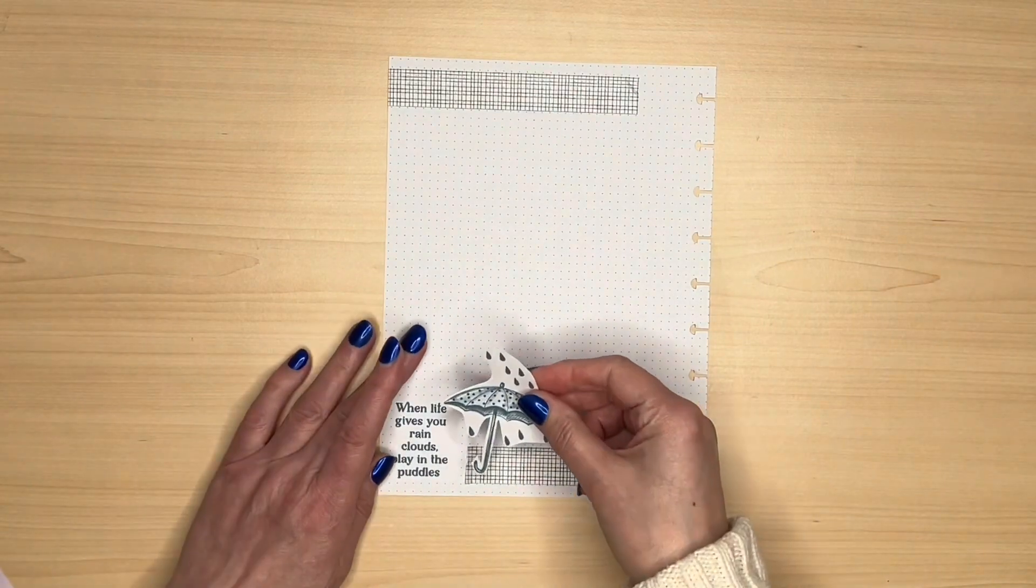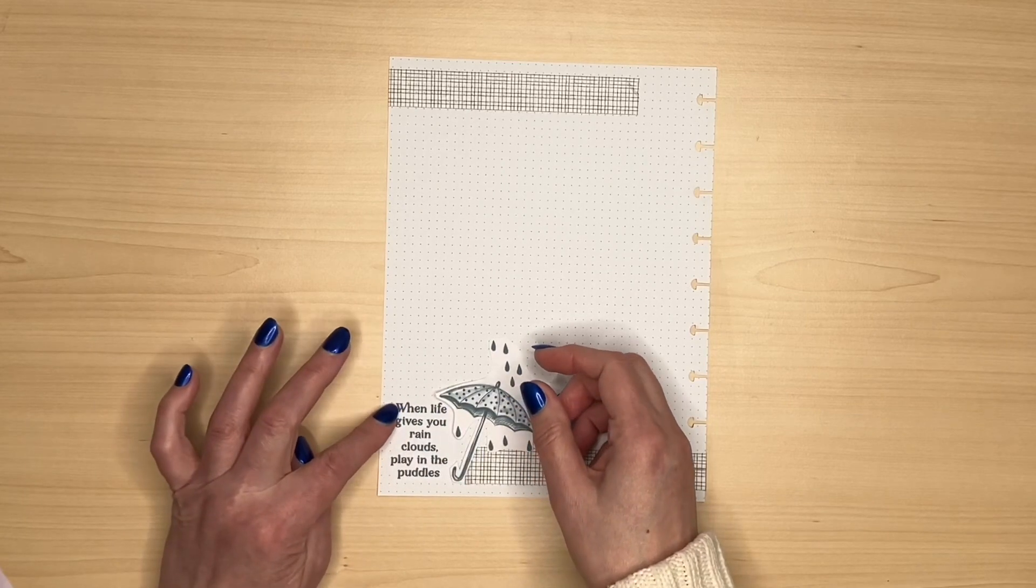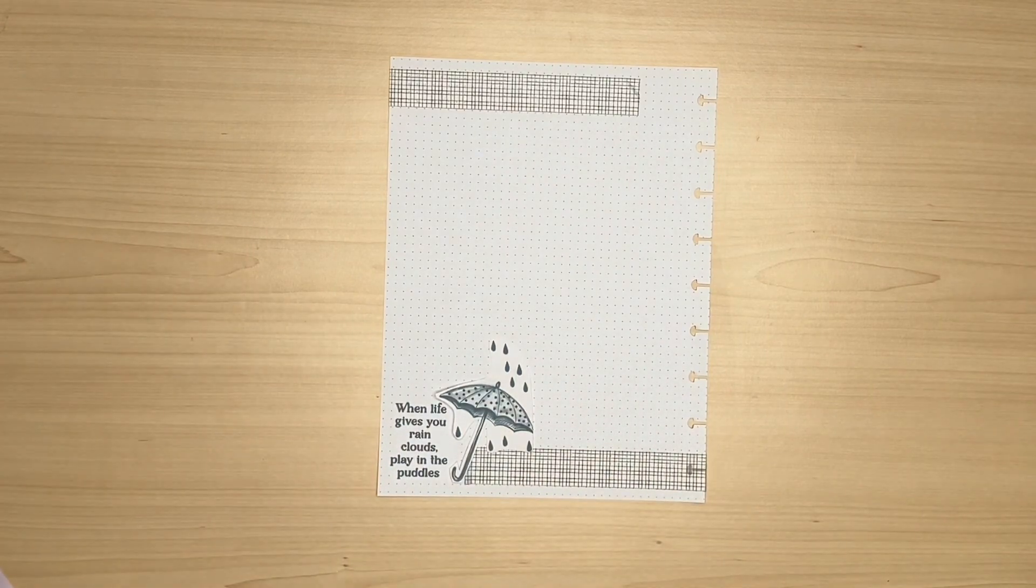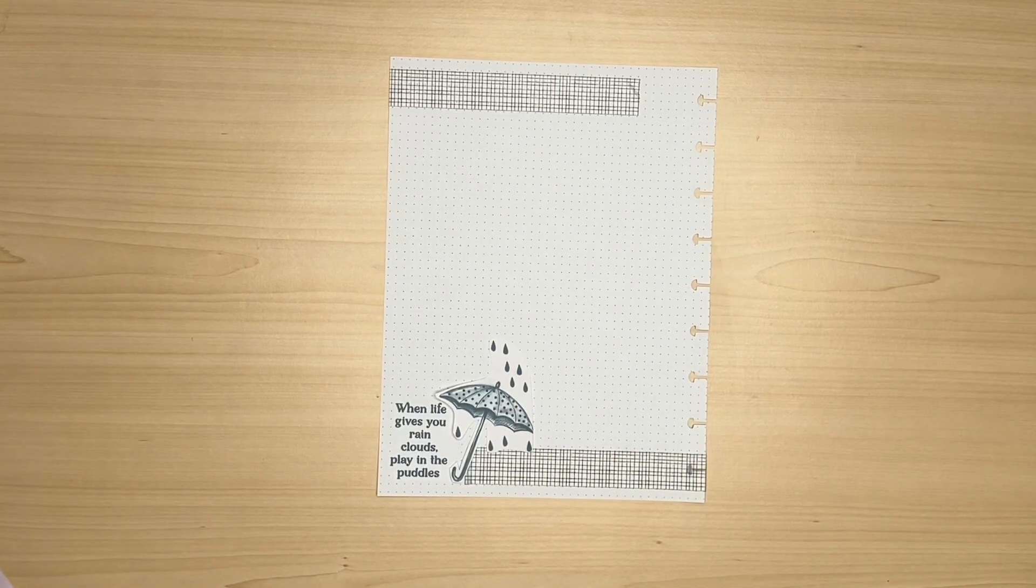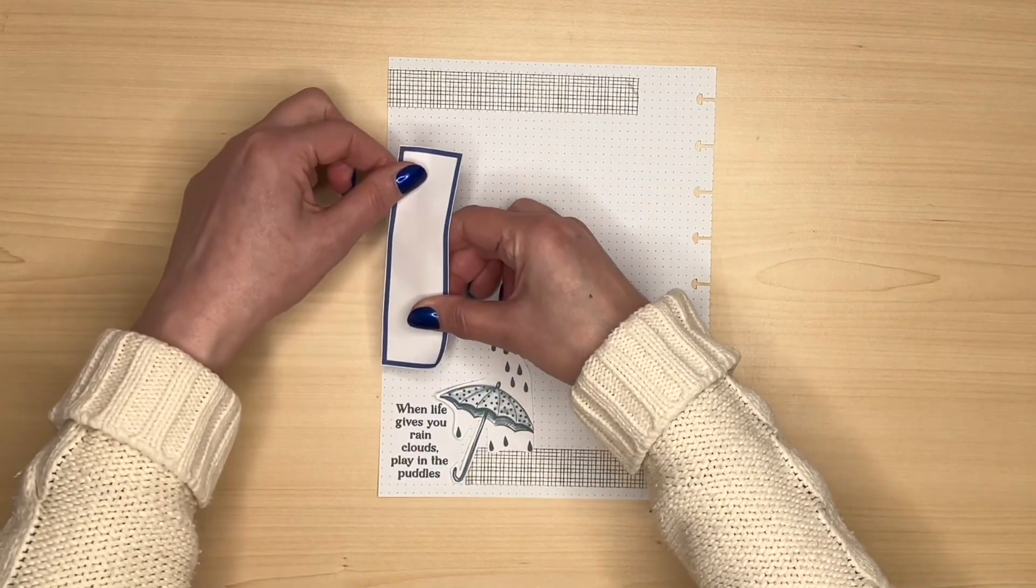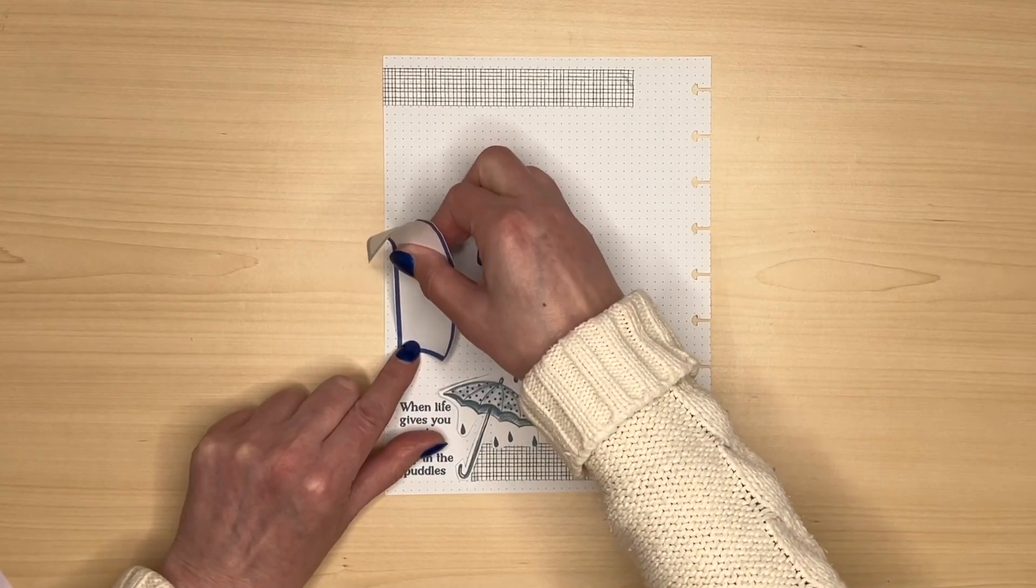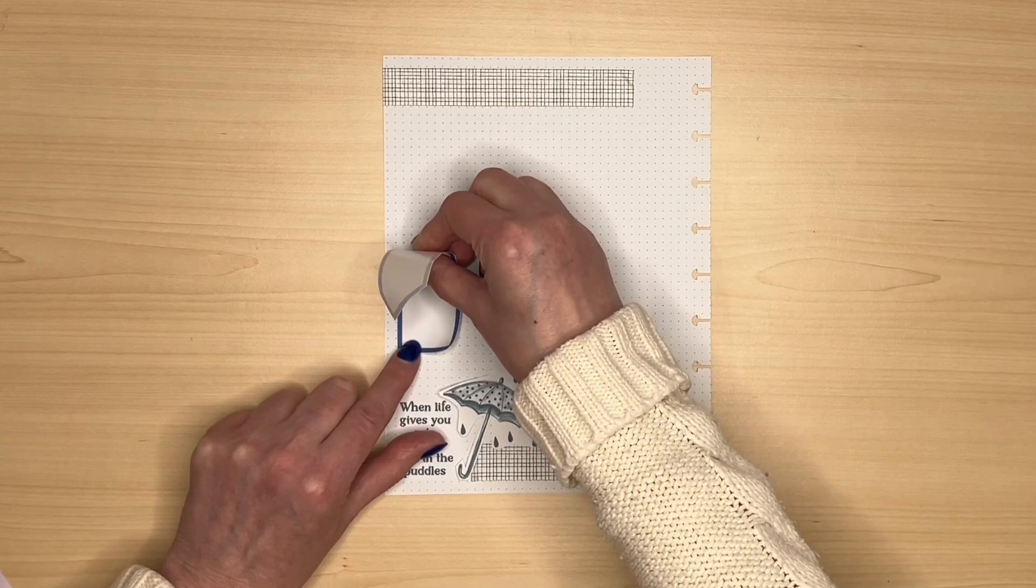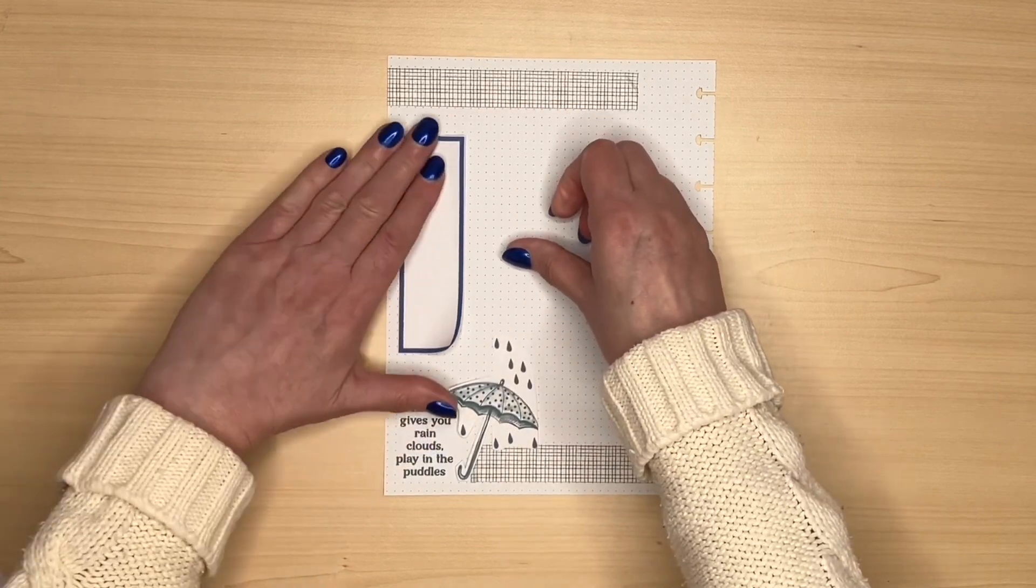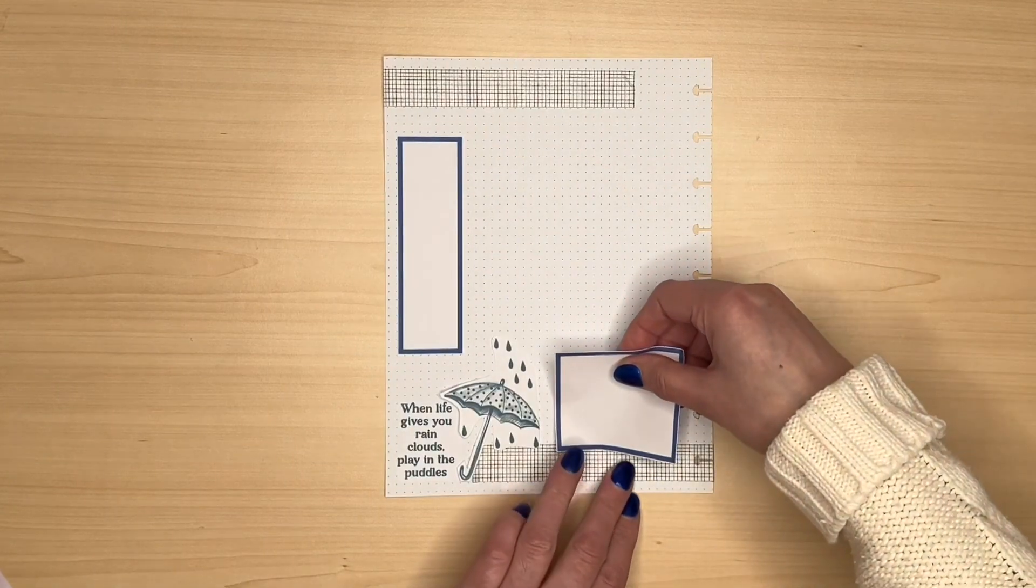I think we'll probably have the umbrella at the bottom and I had to go with when life gives you rain clouds play in the puddles because the other quote was rainy days are my fave and they're definitely not my fave. We've been having quite a lot of rainy days here in the UK lately. I keep waiting for spring to arrive. I'm just adding a few boxes now.